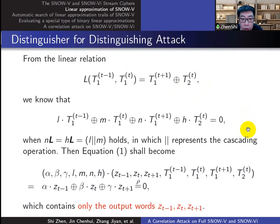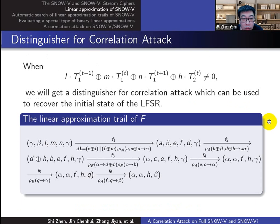If this equation holds, we will get a linear approximation equation containing only the output words, namely a distinguisher for distinguishing attack. When the equation does not work, we shall get a distinguisher for correlation attack.